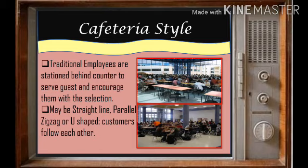Cafeteria style: traditional employees are stationed behind a counter to serve guests and encourage them with their selections. This service exists in industrial canteens, hostels, and cafeterias. The menu and space are limited, cutlery is handed to guests, tables are not covered, sometimes hard chairs are provided at narrow tables, and the service is quick.